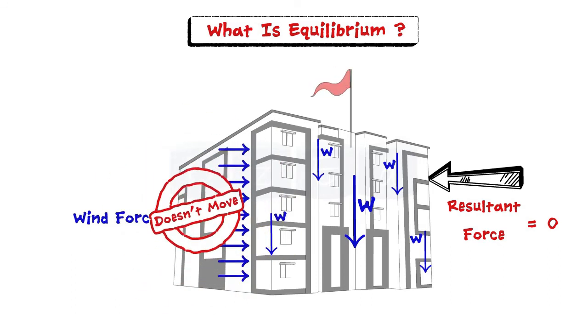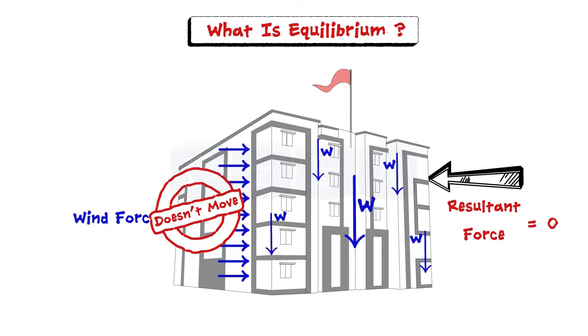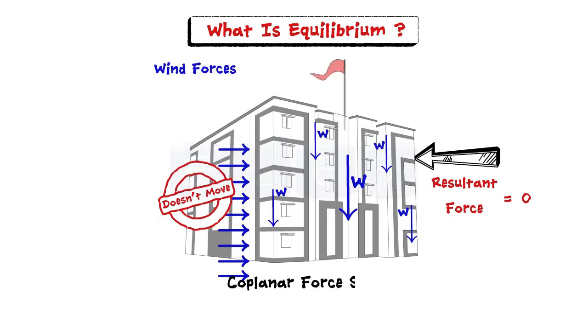This state of the building under a zero resultant force is known as the equilibrium of forces. For a coplanar force system to be in equilibrium, the resultant of the force system should be zero.